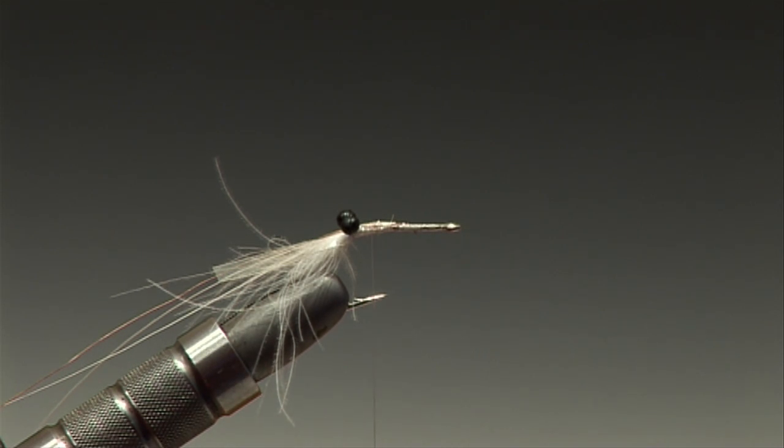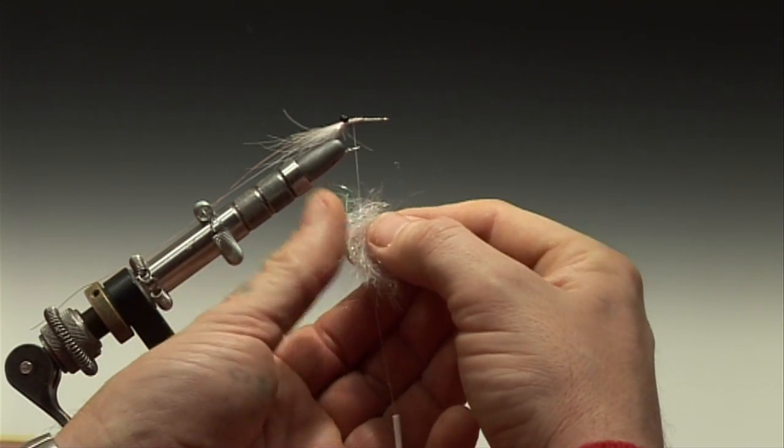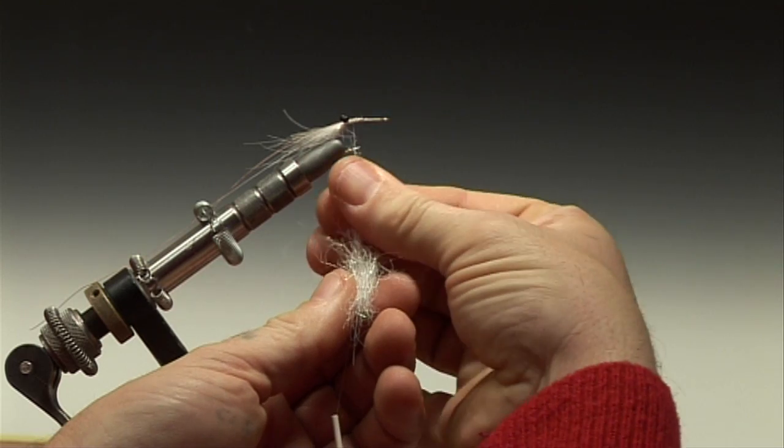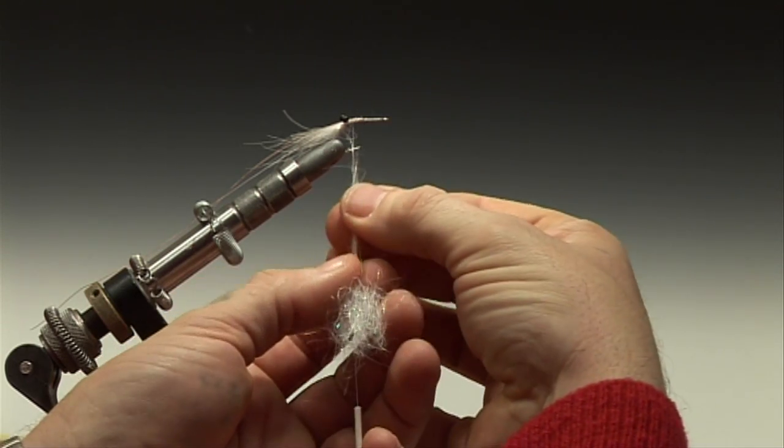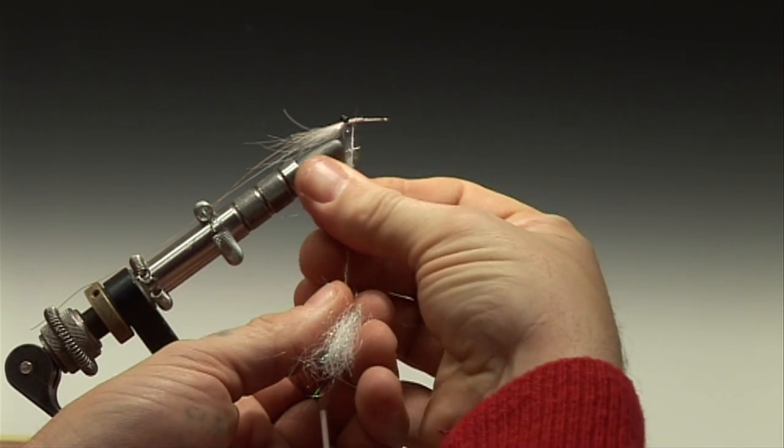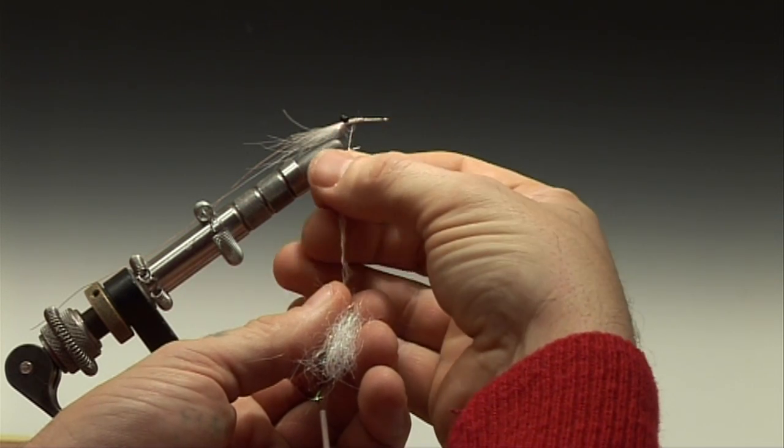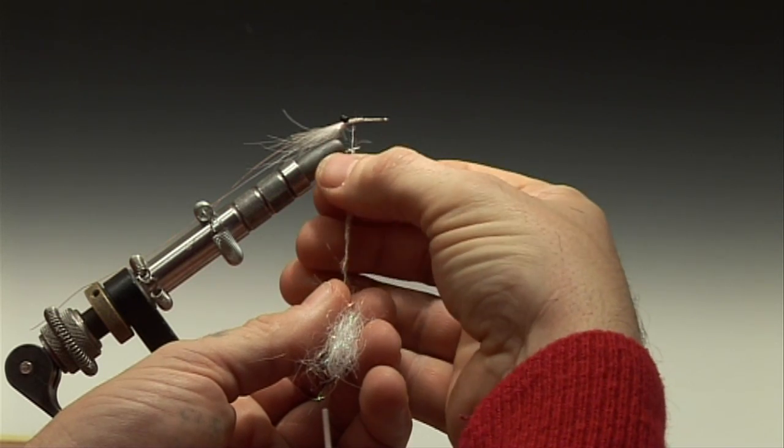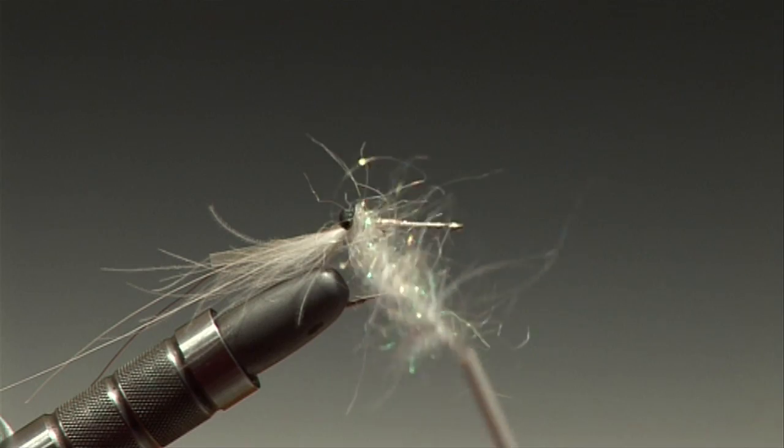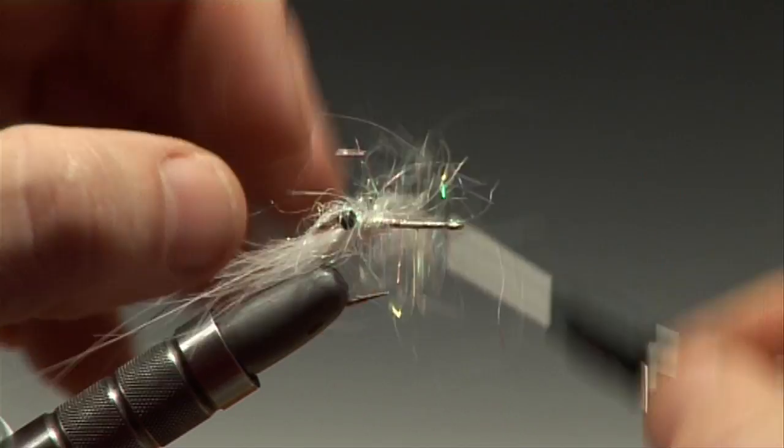Once those are secured you can mix your dubbing. Here I use a white light bright mixed with just a little bit of pink light bright. When you apply this dubbing it should be quite loose because you want some good hairy legs on this pattern.